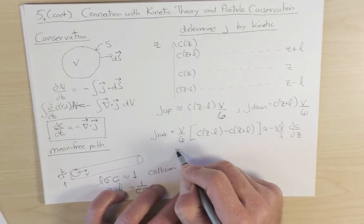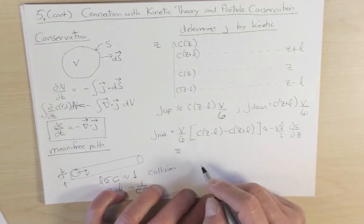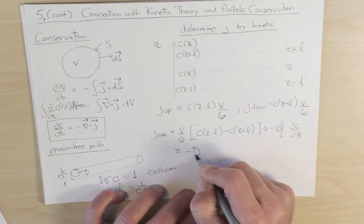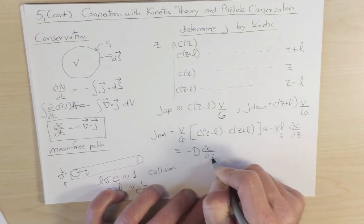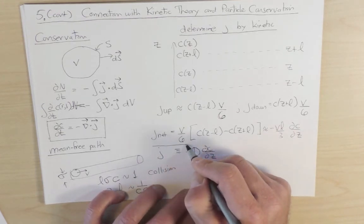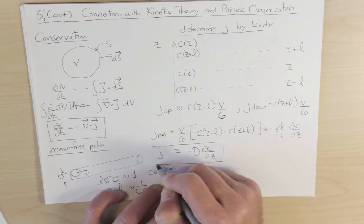More generally, so this I can therefore define as minus d dc by dz. So this is the fundamental relation between the current and the concentration gradient.